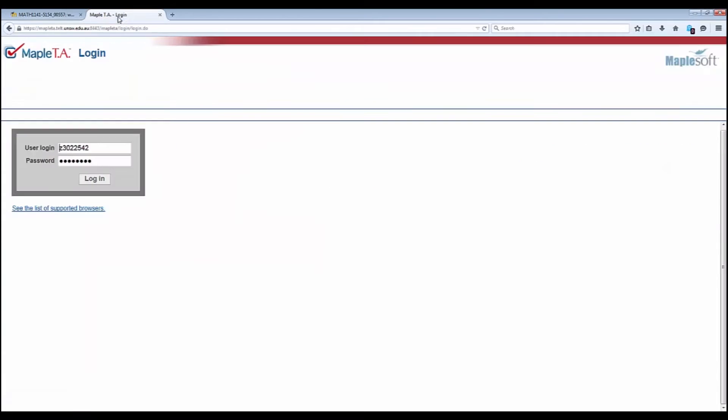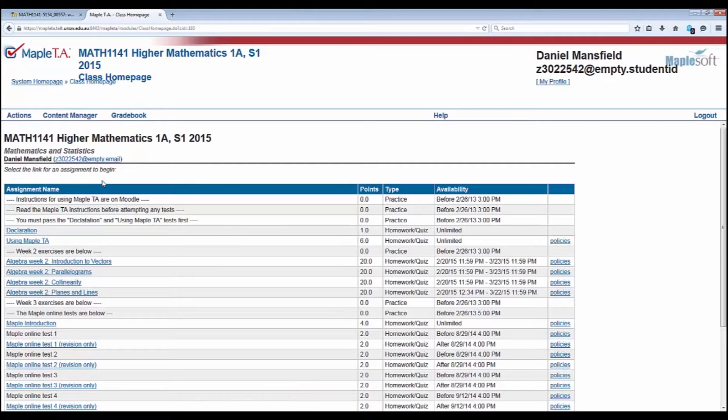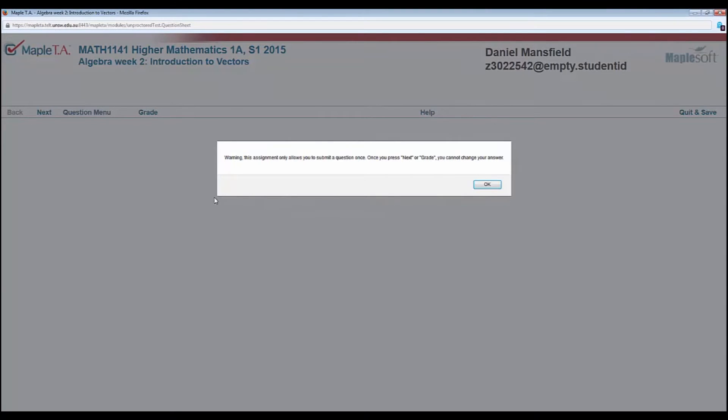So I'll click on there. And I log into Maple TA. And we're looking for the Week 2 exercises which are here. Here's my Week 2 exercise for Introduction to Vectors. It warns me that I can only submit a question once. Once I press next or grade, then I cannot change my answer. Very good. So be it.